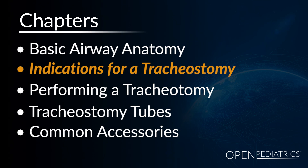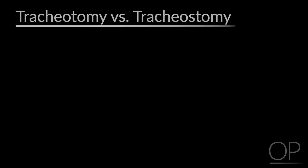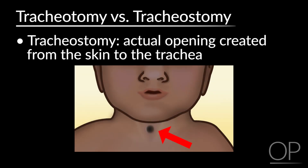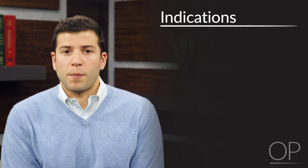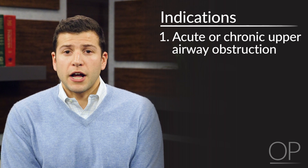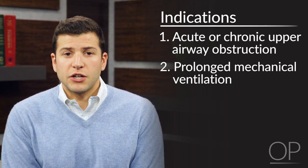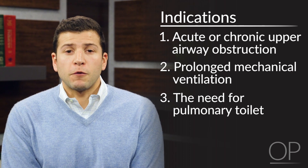Indications for a tracheostomy. Oftentimes, you'll hear the words tracheotomy and tracheostomy used interchangeably. However, a tracheotomy is the act of making a hole in the trachea, whereas a tracheostomy is the actual opening created from the skin to the trachea. In general, there are three main indications for performing a tracheotomy: one, acute or chronic upper airway obstruction; two, prolonged mechanical ventilation; or three, the need for pulmonary toilet.